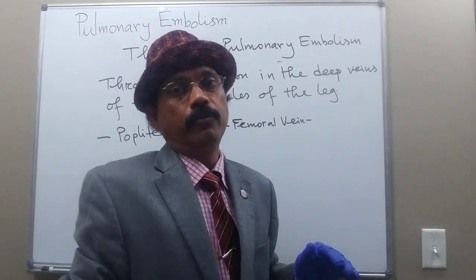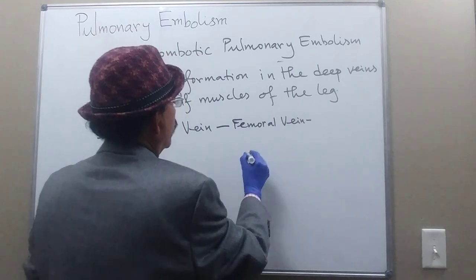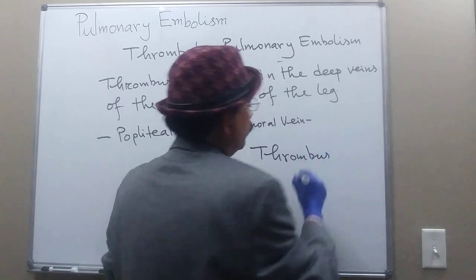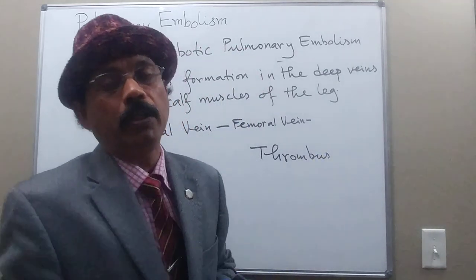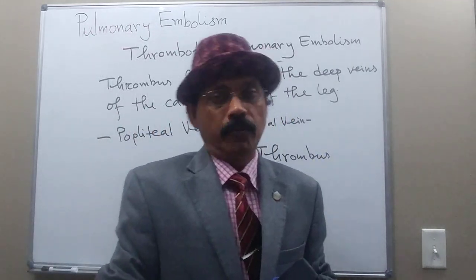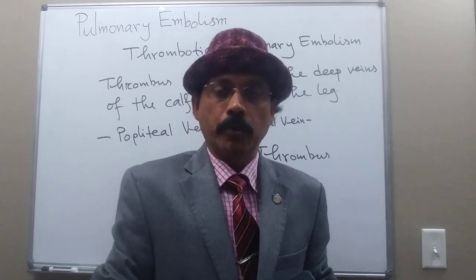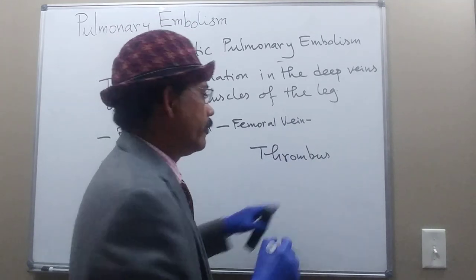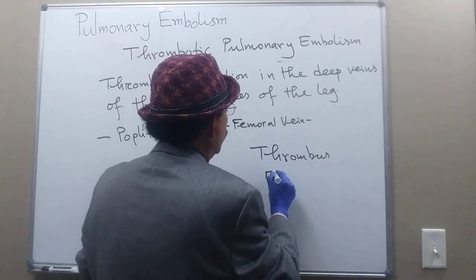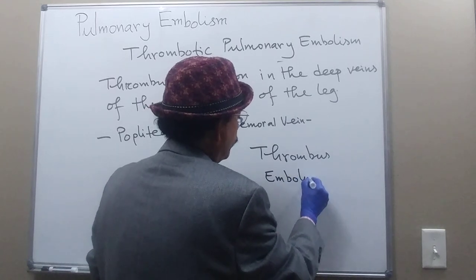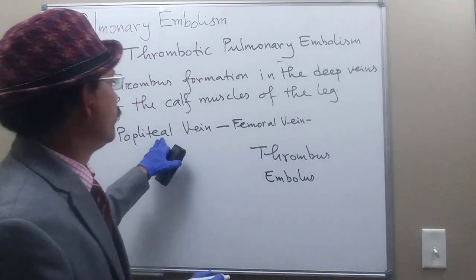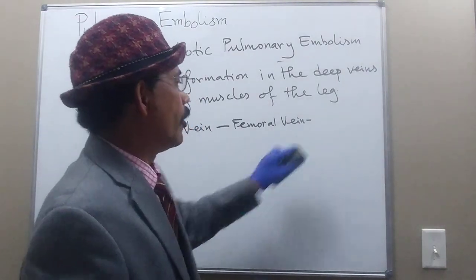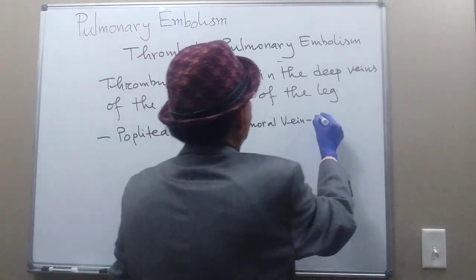We have two terms: thrombus — a collection of platelets, blood cells, and blood clotting factors — that is thrombosis. Once it detaches, we call it an embolus. So in the popliteal vein there will be an embolus, and that embolus goes to the femoral vein.